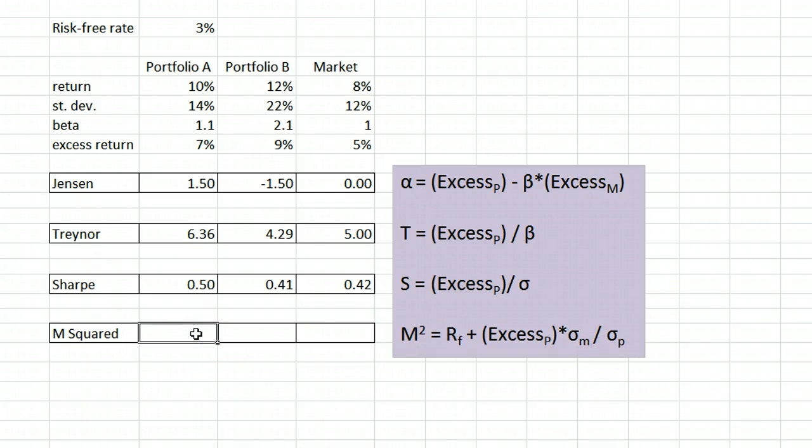For portfolio A, that is the risk-free rate 3, plus its excess return 7, multiplied by the market's standard deviation 12, divided by the portfolio's standard deviation 14. That gives us 9%.